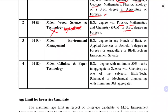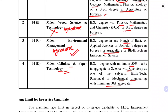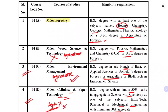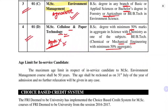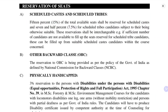Agriculture students cannot apply for MSc Wood Science. For MSc Environmental Sciences, a BSc degree in any branch of basic or applied sciences, or a Bachelor's degree in Forestry or Agriculture is required — so Agriculture students stand a chance here. For Cellulose and Paper Technology, 50% marks in Sciences with Chemistry as one subject, or a BTech in Mechanical Engineering is required. Agriculture students are not eligible for this field. So Agriculture students have two options: MSc Forestry or Environmental Management, or both.